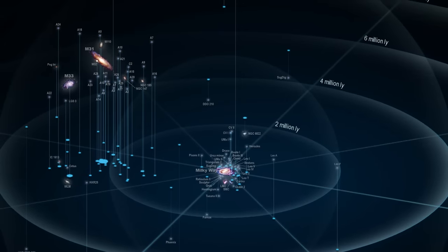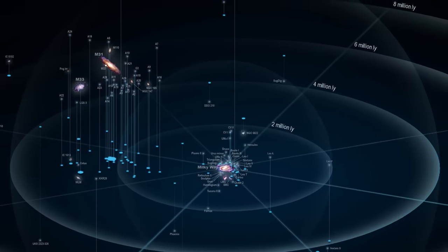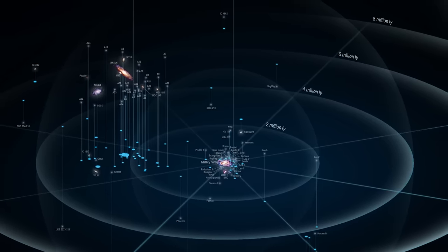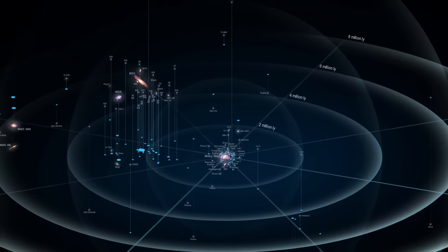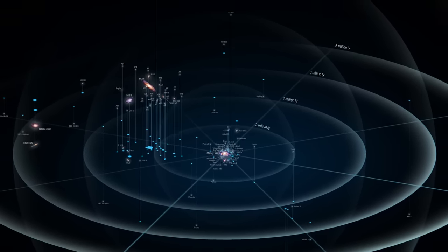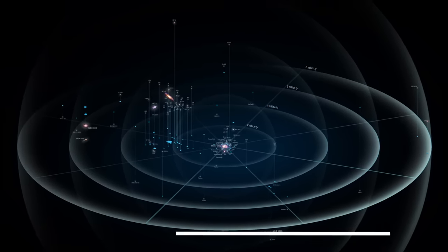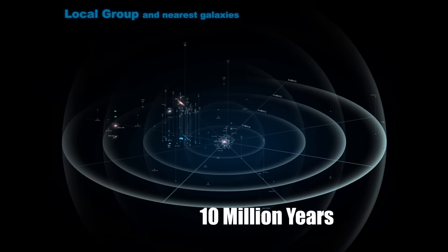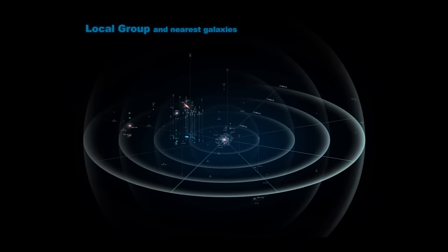The Local Group is a diverse assembly, including not just spiral galaxies like the Milky Way and Andromeda, but also a multitude of smaller dwarf galaxies. The distances here are so vast that light from one end of the Local Group to the other would take 10 million years to traverse. This scale dwarfs anything within our own galaxy, underscoring the enormity of the universe.